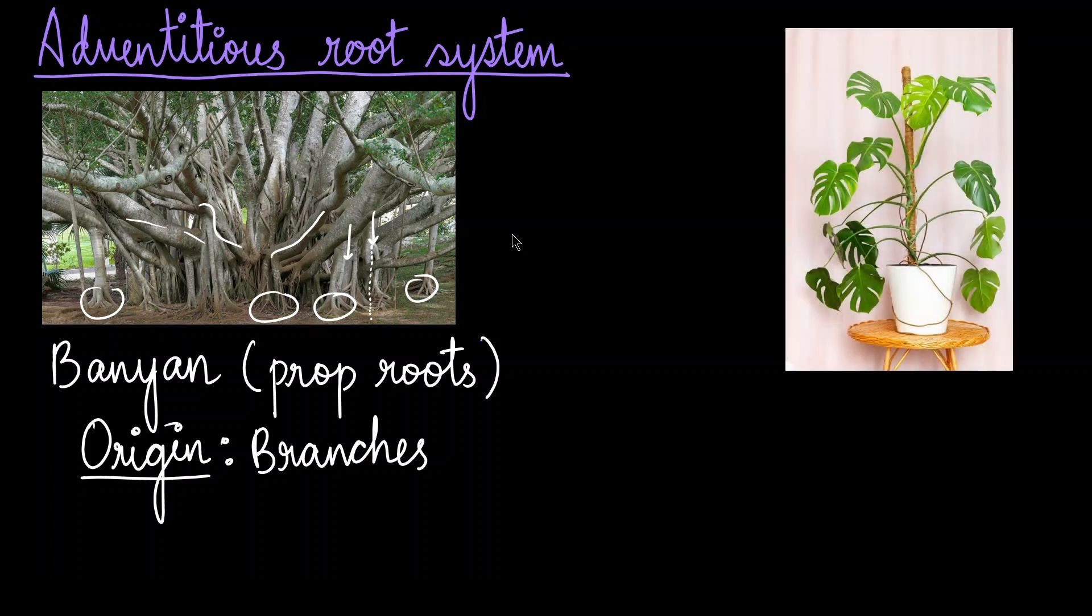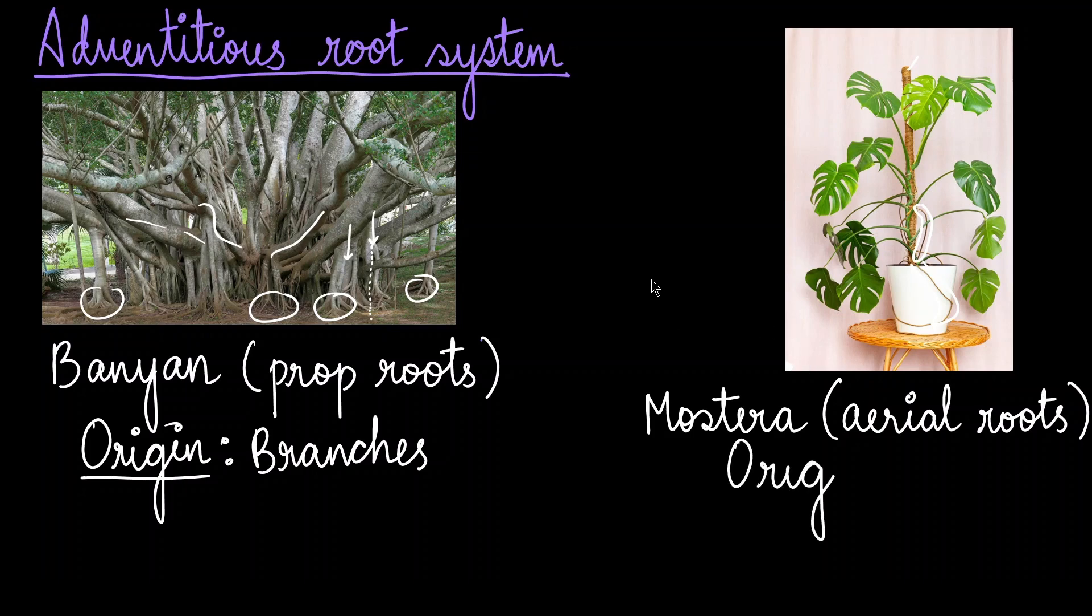Another example we have is of the monstera plant. Monstera is a common indoor house plant, and we can see aerial roots in them. The stem of monstera is not very sturdy, and therefore a support is already given. You can see these brown color root-like structures; they are the aerial roots of monstera plant. The origin of these aerial roots is the nodes that are found on the stem.